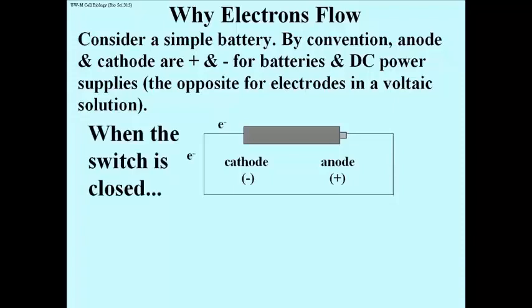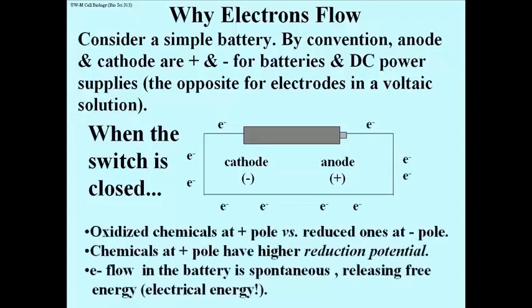When the circuit shown here is closed, electrons flow from the cathode to the anode. This is because the anode contains chemicals with a higher potential to be reduced than the chemicals at the cathodal end of the battery. The chemical reaction in the battery is spontaneous, releasing free energy.